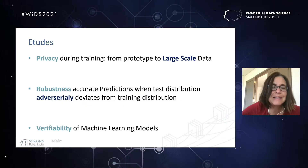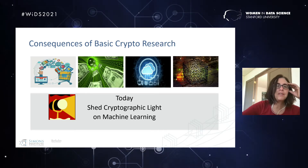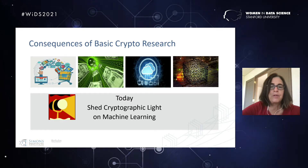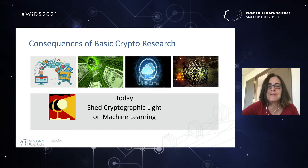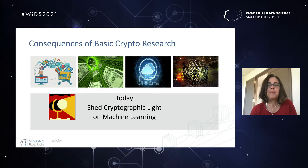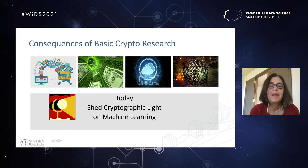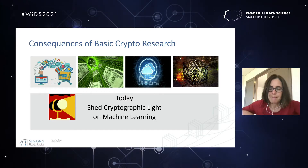I'm the director of the Simons Institute at UC Berkeley. What I'm going to talk about today is the impact of cryptography on machine learning research. Basic crypto research — basic science without any idea of applications — has had a tremendous impact on electronic commerce, cryptocurrencies, cloud computing. People are also talking about quantum computation and coming up with crypto systems secure even with respect to quantum computers.